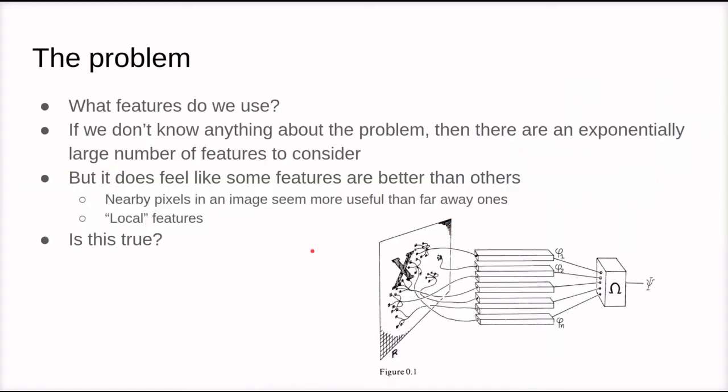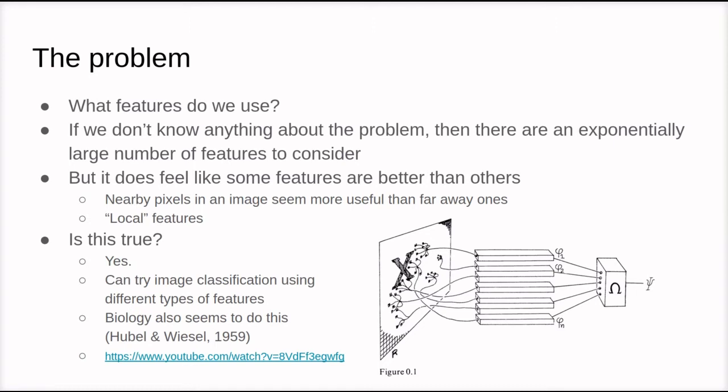We're left with the problem of trying to determine what features to use. If we don't know anything about the problem and we are exhaustively searching through the space of possible features, then there are an exponentially large number of features to try. But we may have the intuition that some features are better than others for helping neural networks discriminate between different inputs. Is this intuition correct? Yes, it is.